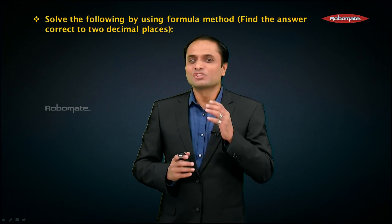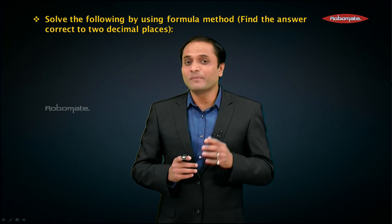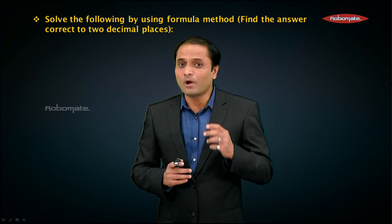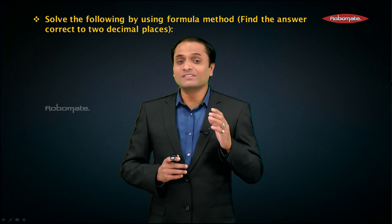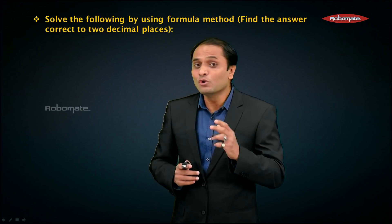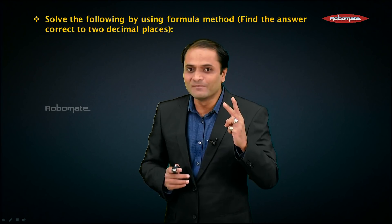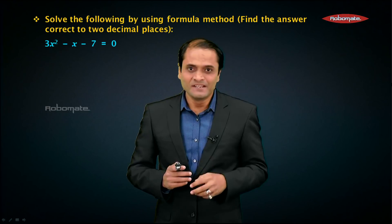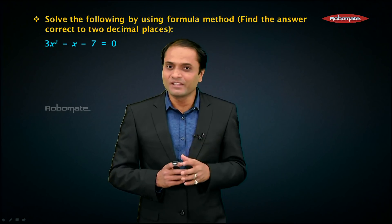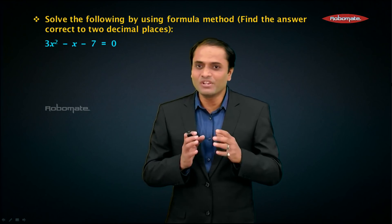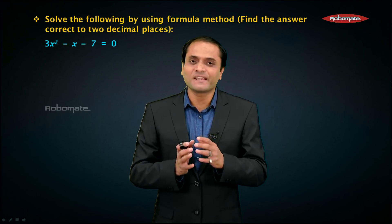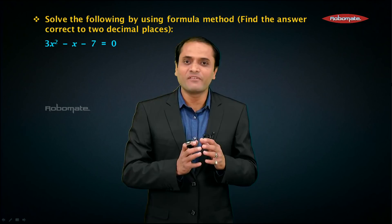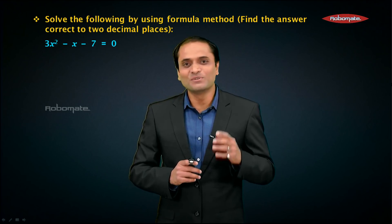The question says: solve the following by using the formula method and find the answer correct to two decimal places. Here is the equation: 3x² - x - 7 = 0.